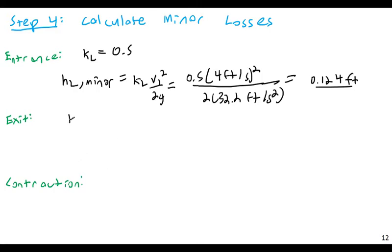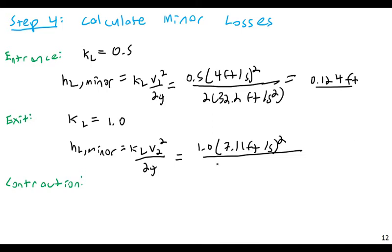And here, from another table in the book with an exit on it, I get that KL is equal to 1.0, and for this, HL minor is equal to KL, and this time I'm going to use V2, because it's the exit, and it's connected to the second piece of pipe, V2 squared divided by 2G, equals then 1.0 times 7.11 feet per second quantity squared divided by 2 times 32.2, and I get a minor loss here of 0.785 feet.